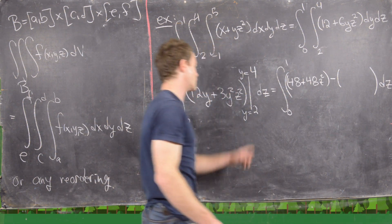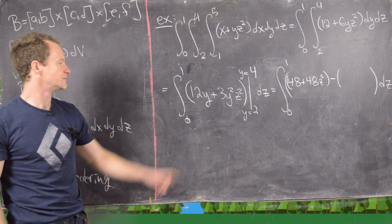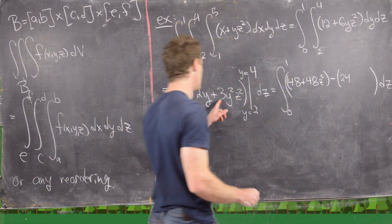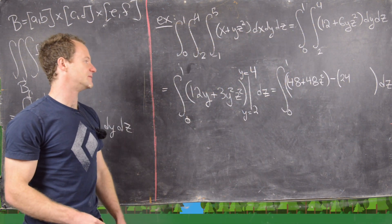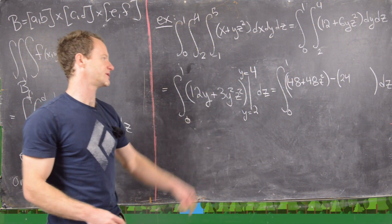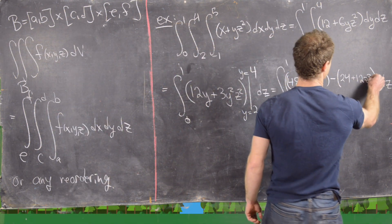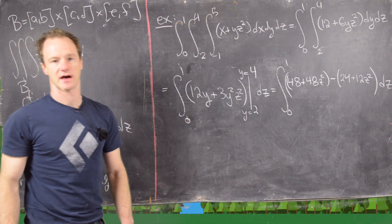And now we have to subtract what we get from plugging 2 in. So 2 times 12 is 24, and then 3 times 2 squared. So that's 3 times 4, which is 12z squared.